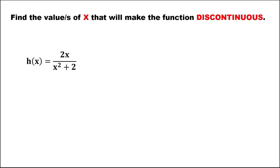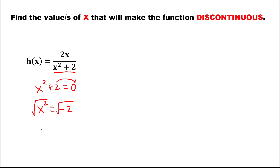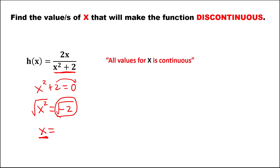For this third function, again focus on the denominator and equate it to 0. Solving for x gives x squared equals negative 2. Taking the square root, since this is the square root of a negative number, which is an imaginary number, there are no real values of x that will make the denominator equal to 0. So for this function, all values of x are continuous.